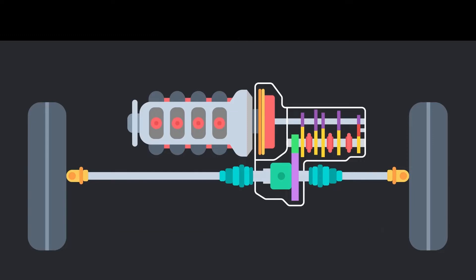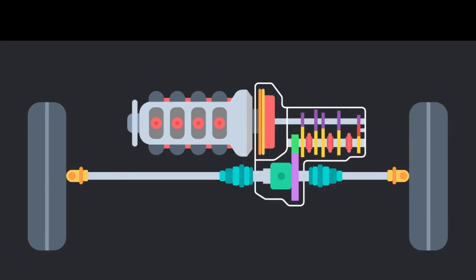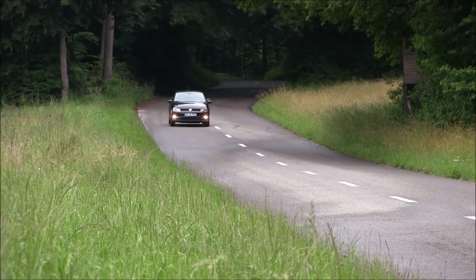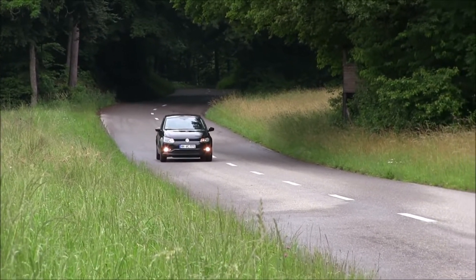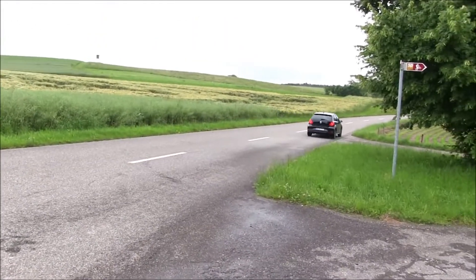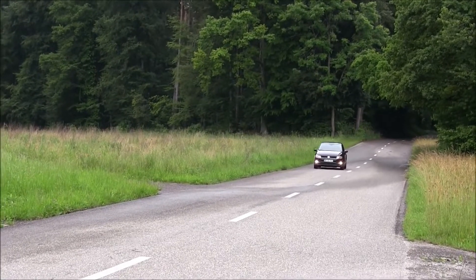This engine is also connected directly to a device known as the transaxle. The transaxle is a single mechanical unit that combines the transmission, the drive shaft, and the differential in order to transfer power to the front wheels to turn them. The transverse layout is the most suitable engine configuration for front wheel drive because the engine is nearest to the driven wheels and power delivery is very optimum and convenient under these conditions.